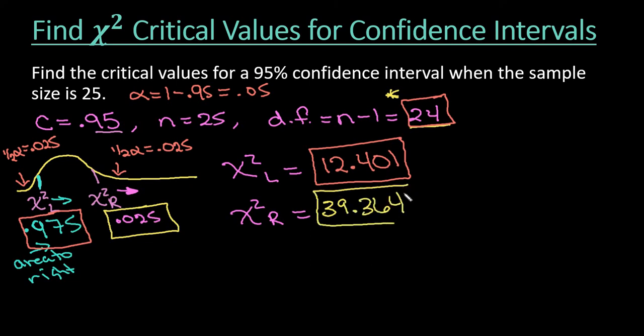So these would be my critical values that I would use for my chi-square confidence interval, and so I would plug in the appropriate value into the formula. As always, thanks for watching. If you have any questions, please let me know. If there are additional topics that you would like me to cover, please let me know that as well. Thank you.